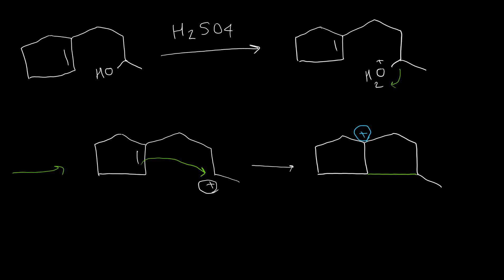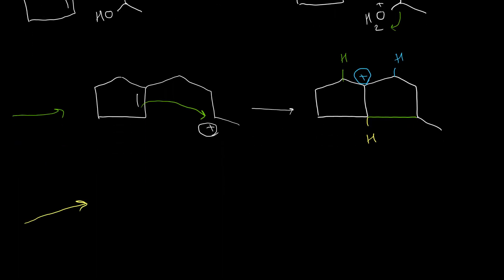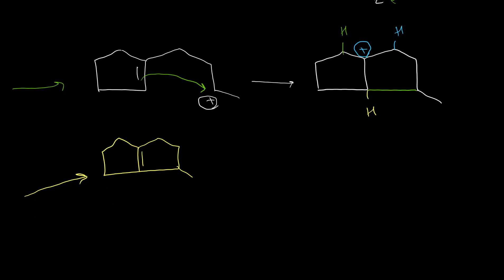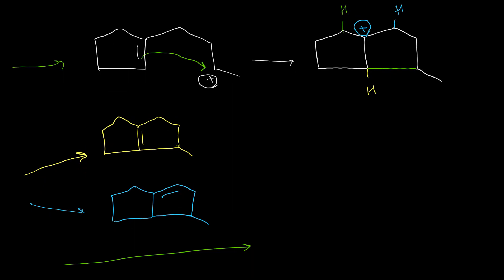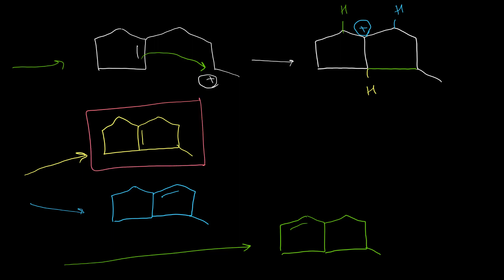The rearrangement is a little different from the previous examples. This tertiary carbocation has hydrogens in three different positions, shown by three different colors, and there are three different possibilities for formation of alkene. If we take the yellow hydrogen, we have one product. If water takes the blue hydrogen, we have another product. And if water takes the green hydrogen, we have a third product. The yellow one is the major product according to the Zaitsev rule — it is a tetra-substituted alkene.